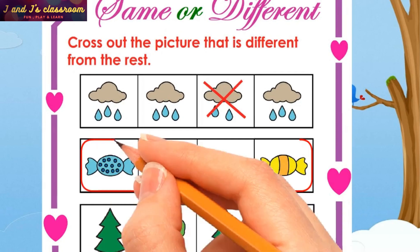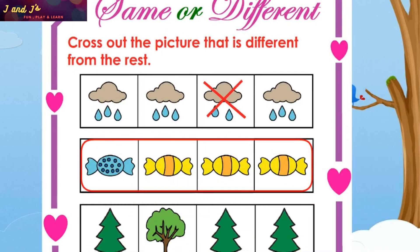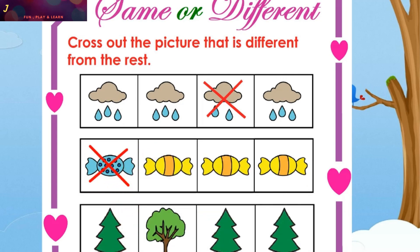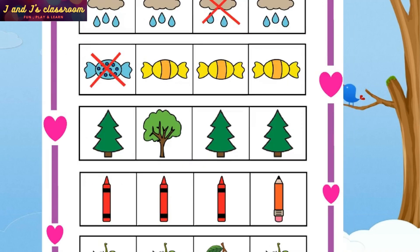Then the second row — there are four candies. Which one is different from this group? Blue candy! Yes, of course. Now cross out this blue candy.